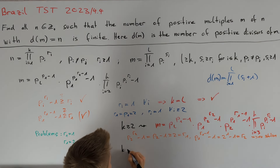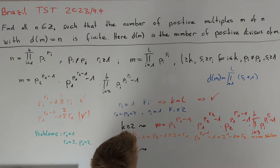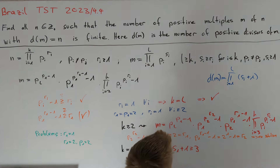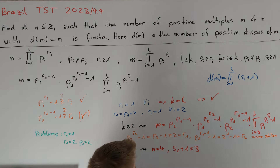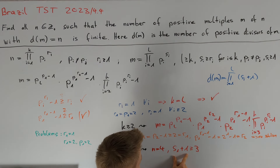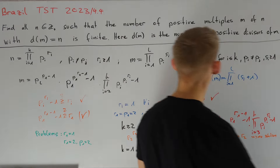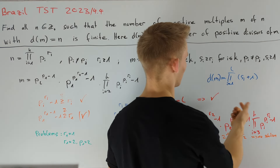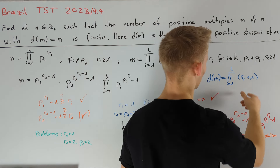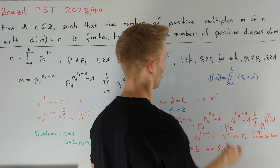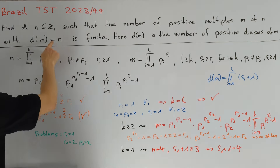We are left with the case k equal to 1, where n must equal 4. Since r1 equals 2, we know s1 plus 1 is greater than or equal to 3. Since d(m) must equal n, all factors of d(m) are divisors of n, so s1 plus 1 must equal 4. Looking at d(m) equaling 4, all remaining factors must equal 1, which requires l equal to 1. Therefore the only possible value for m is m equals 8, and this is indeed a solution. We are done.